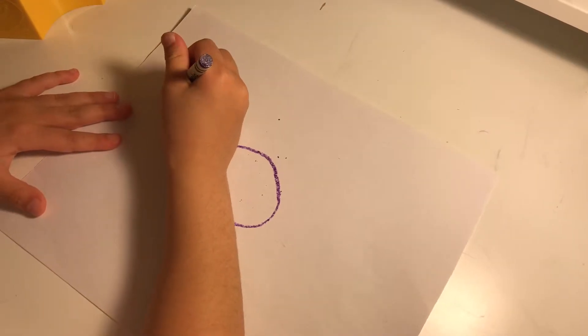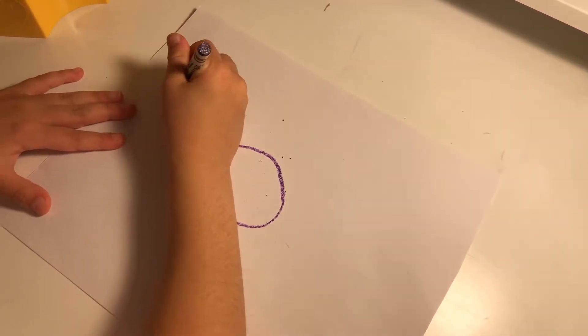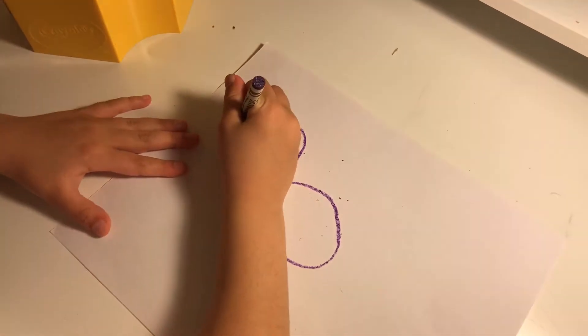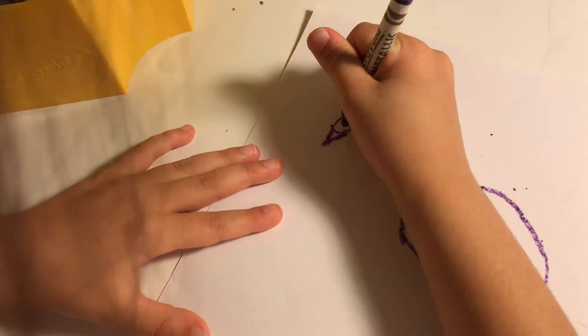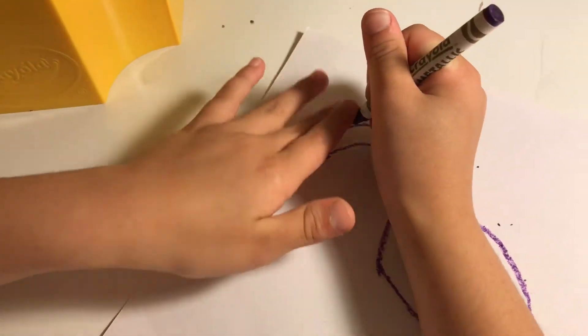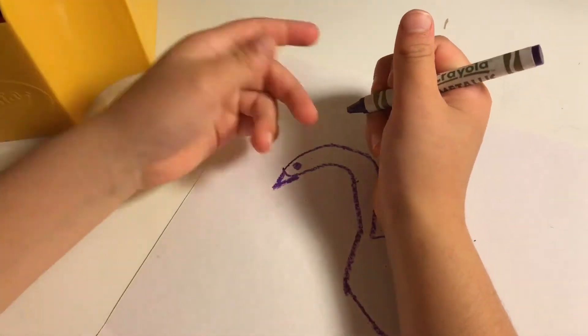And you make a beak like that. It's like a triangle. It's supposed to be a triangle like real beaks are. And then for the eyes, circles. They do not have eyelashes.